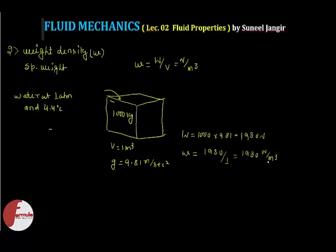Now if the water is at the same state and we pour it into the same container, and then take this closed container to the moon, the gravitational acceleration of the moon is less. That's why the weight of this water will also be less, so the weight density or specific weight of water on the moon will be less.